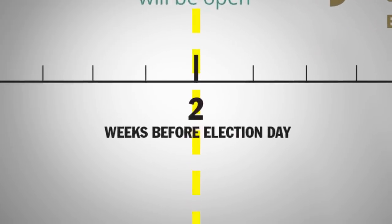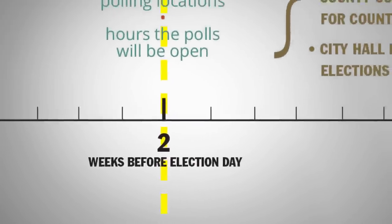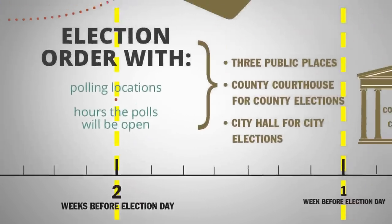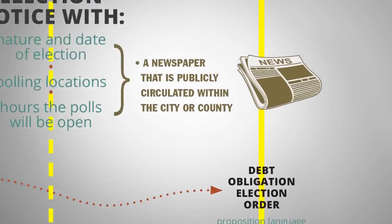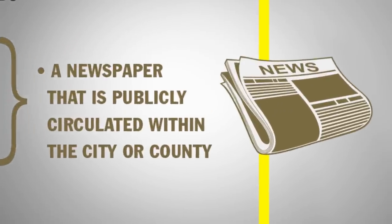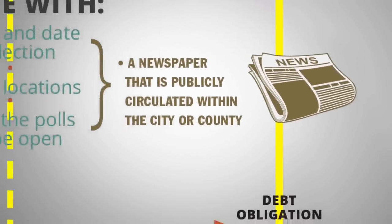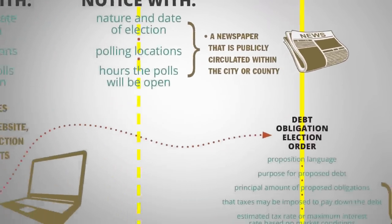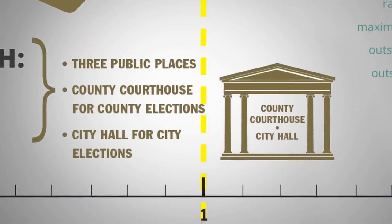Starting at least two weeks before the election, a city, county, or a political subdivision or defined district of a city or county is required to publish an election notice in a newspaper on the same day for two weeks in a row. It must also post an election notice in three public places.